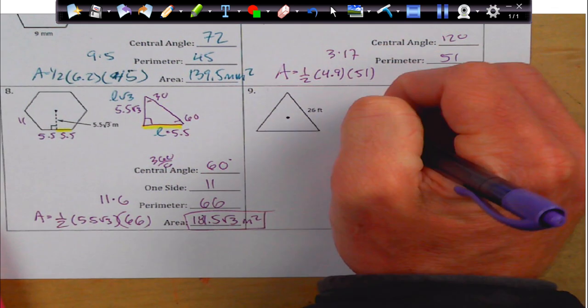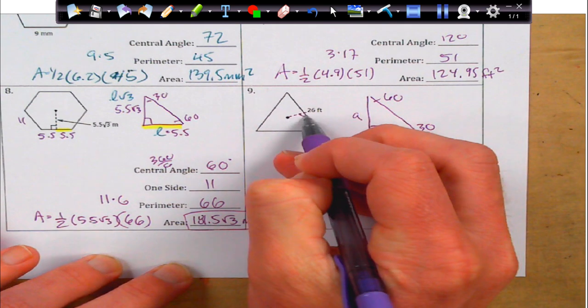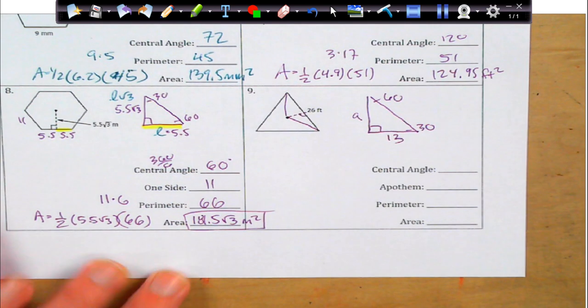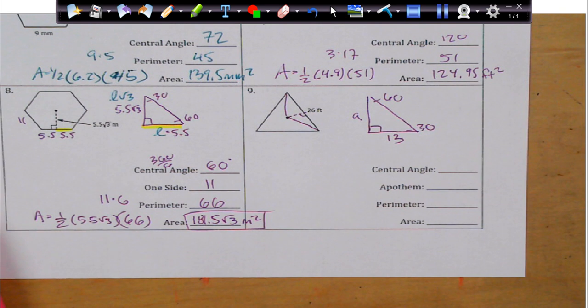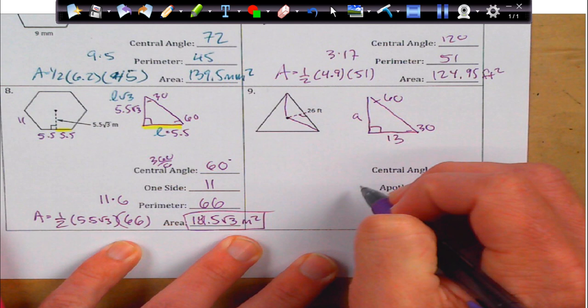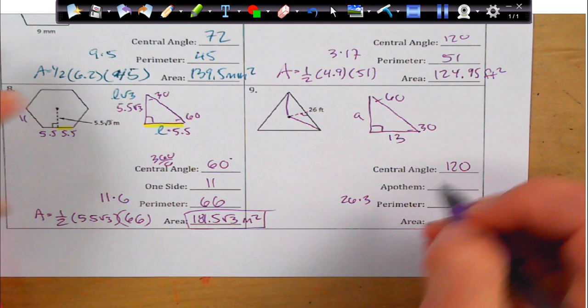Now, this time, I don't know my apothem, but I do know my half side. Again, the apothem is going to cut that in half. So, instead of 26, I'm going to get 13 here. Now, my central angle, like I saw before, it's 120. I don't know my apothem. My perimeter is going to be pretty easy to find. It's just going to be 26 times 3. Which is going to give me 78.